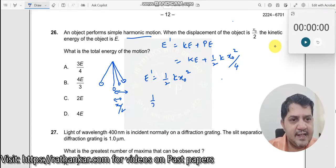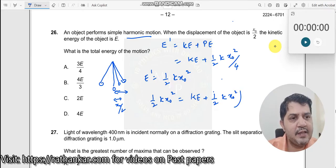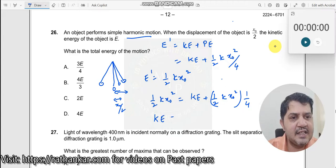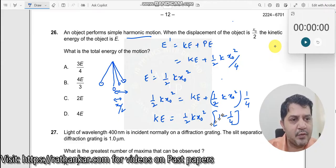So I can write this as half k x₀² equals kinetic energy plus half k x₀² times 1/4. Now, this kinetic energy equals half k x₀² times (1 minus 1/4), because I moved this term to the other side.